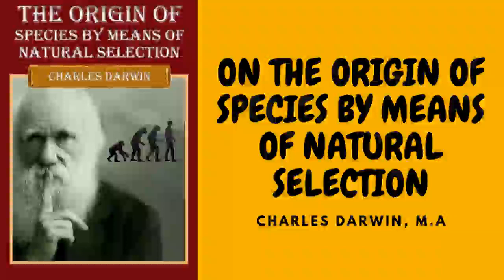For instance, I crossed some uniformly white fantails with some uniformly black barbs, and they produced mottled brown and black birds; these I again crossed together, and one grandchild of pure white fantail and pure black barb was of as beautiful a blue color, with the white rump, double black wing bar, and barred and white-edged tail feathers as any wild rock pigeon. We can understand these facts on the well-known principle of reversion to ancestral characters if all the domestic breeds have descended from the rock pigeon. But if we deny this, we must make one of two highly improbable suppositions: either that all the several imagined aboriginal stocks were colored and marked like the rock pigeon, so that in each separate breed there might be a tendency to revert to the very same colors and markings, or that each breed has within a dozen or score of generations been crossed by the rock pigeon.